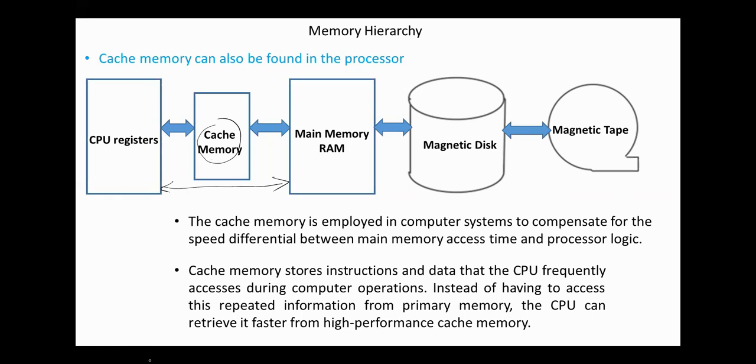Cache memory is employed in computer systems to compensate for the speed differences between main memory access time and processor logic. In some systems, three levels of cache memory are used.